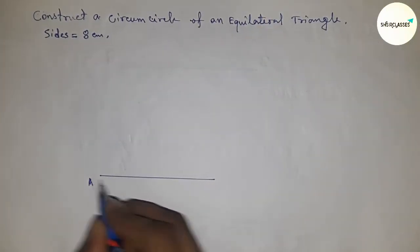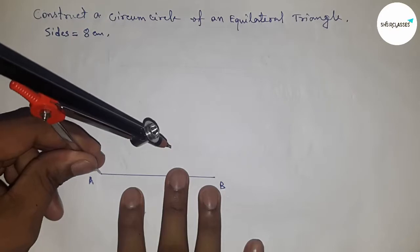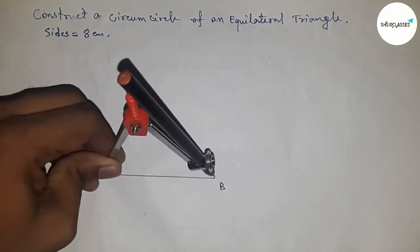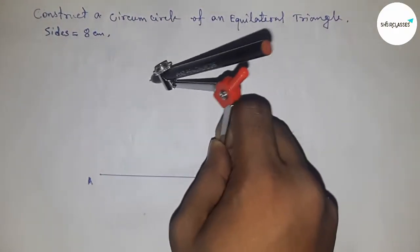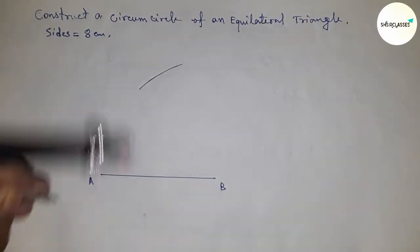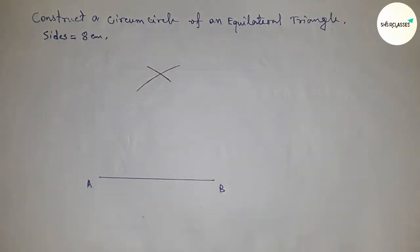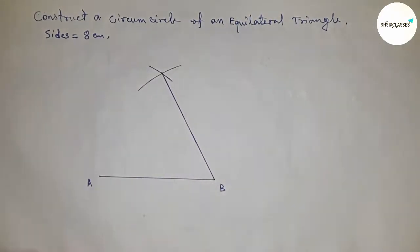And this is AB. Next, taking the length of side AB and putting the compass here and drawing an arc. Again, putting the compass here and drawing an arc. Next, joining this and joining this.